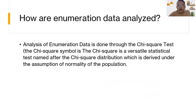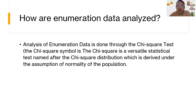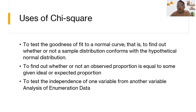How are enumeration data analyzed? Analysis of enumeration data is done through the g-square test. The g-square test symbol is g-square — a statistical test named after the g-square distribution, which is derived under the assumption of normality of the population.